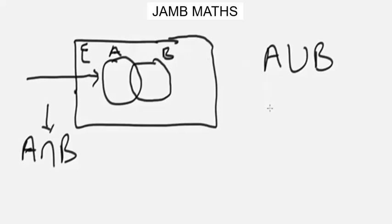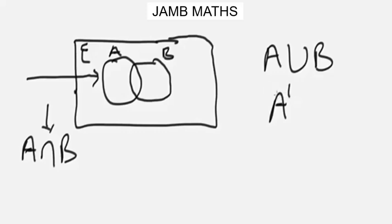One more: if we have something like A complement, we refer to this as the complement of a set. The complement of a set is simply the elements that are in the universal set which are not in that set itself. Having known these basic terms, let me get a typical probability question we are going to solve using sets and Venn diagram concepts.